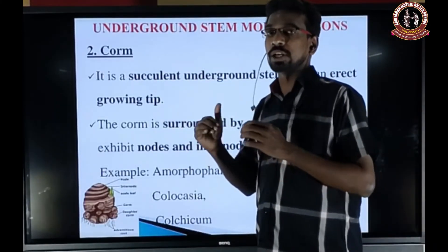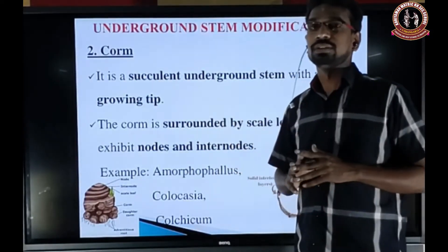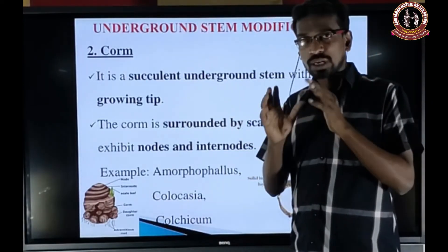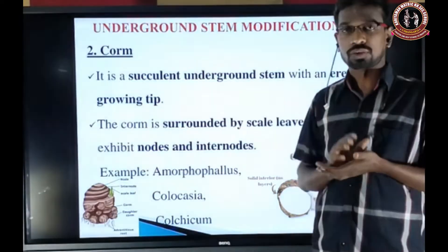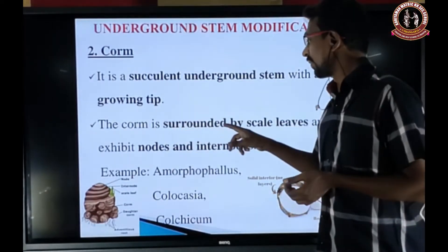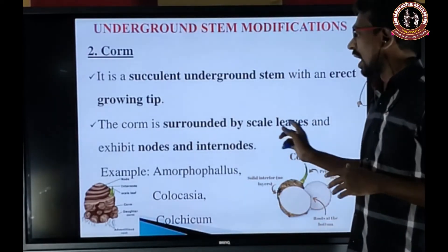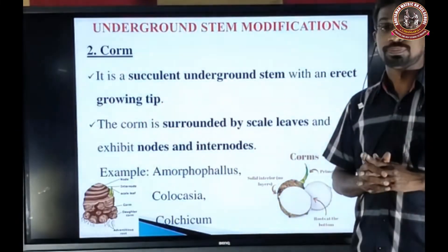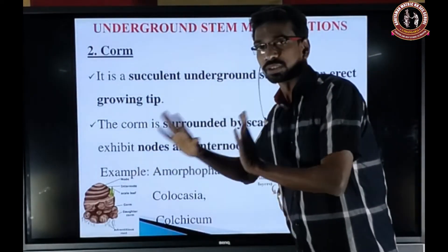The next type of underground modification is the corm. It is a circular underground stem with an erect growing tip present outside the soil. The corm is surrounded by scale leaves and has both node and internode present. The presence of node, internode, and scale leaves are the characteristic features confirming it is a modified stem.